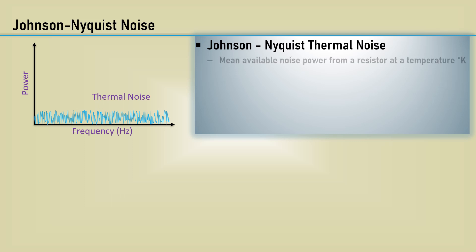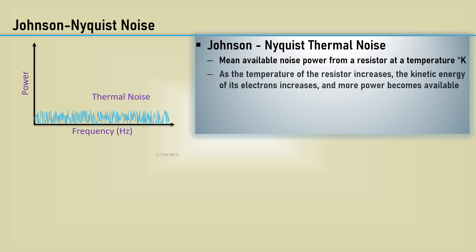It's basically the mean available noise power from a resistor at a specific temperature. As the temperature of the resistor increases, the kinetic energy of its electrons increases, and more power becomes available. Thermal noise is broadband and virtually flat with frequency, and because of that, it's also called F to the zero power noise.